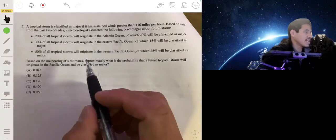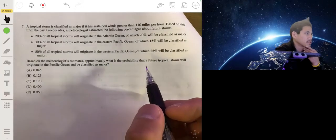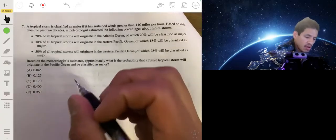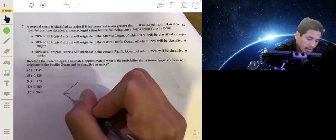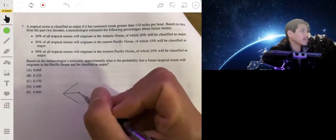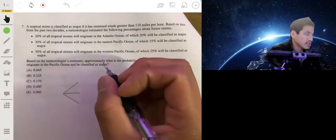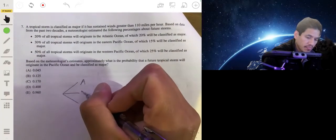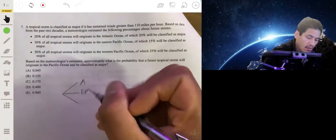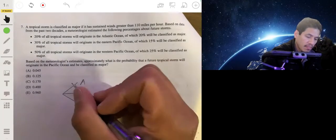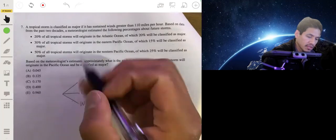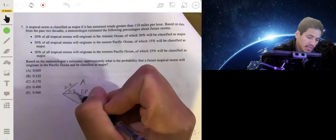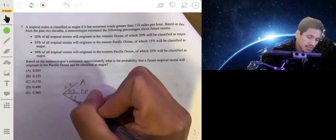Based on the meteorologist's estimates, approximately what is the probability that a future tropical storm will originate in the Pacific and be classified as major? A good way to set up this problem is to create a tree diagram. This will give you a good visual of what's going on. You either have a storm coming from the Atlantic Ocean, or the eastern Pacific, or the western Pacific. I'll put the corresponding probabilities on here. So 20% chance from the Atlantic, 30% chance from the eastern Pacific, and then 50% chance from the western Pacific.